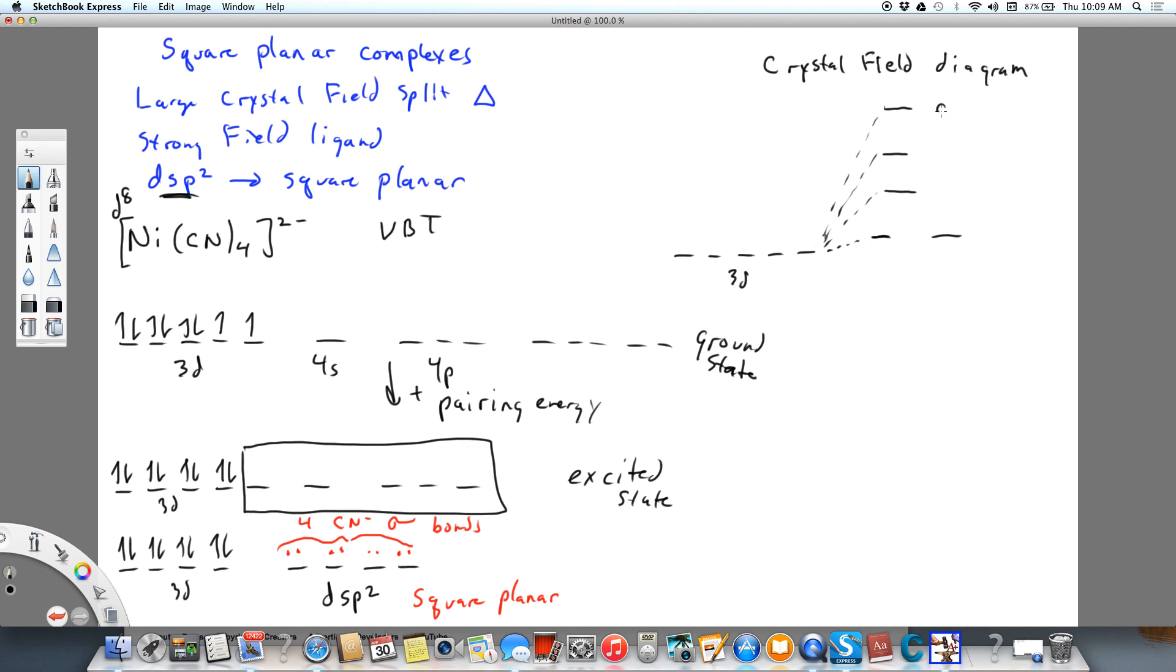This orbital is dx² minus y². This orbital is dxy. This orbital is dz². This orbital is dyz, and this orbital is dxz.